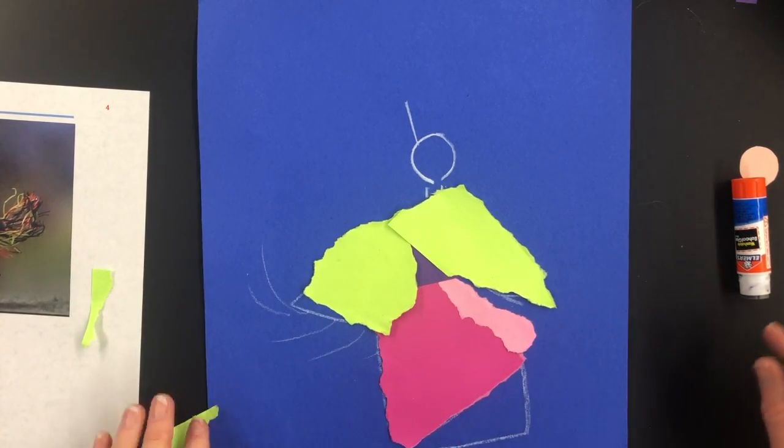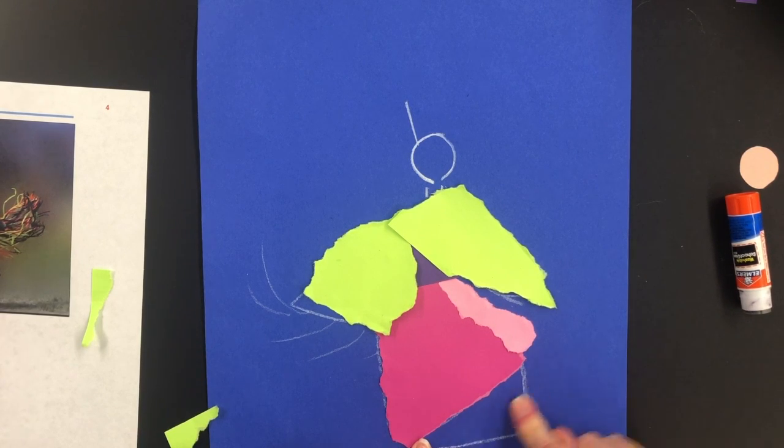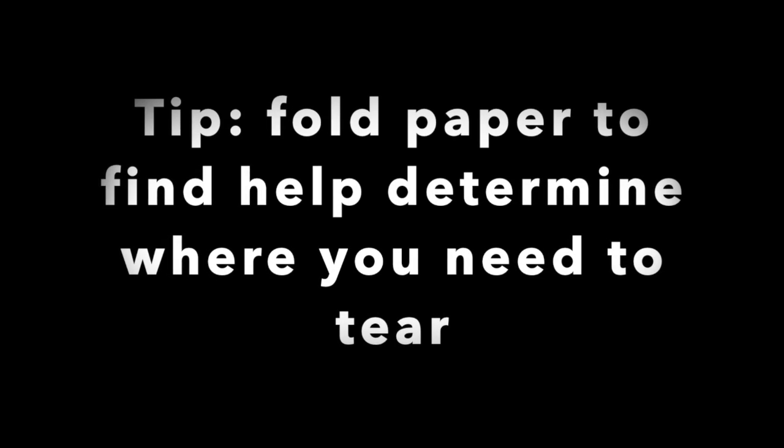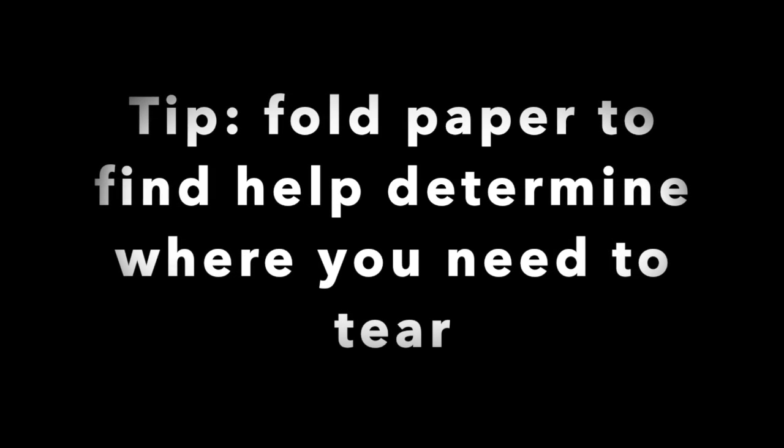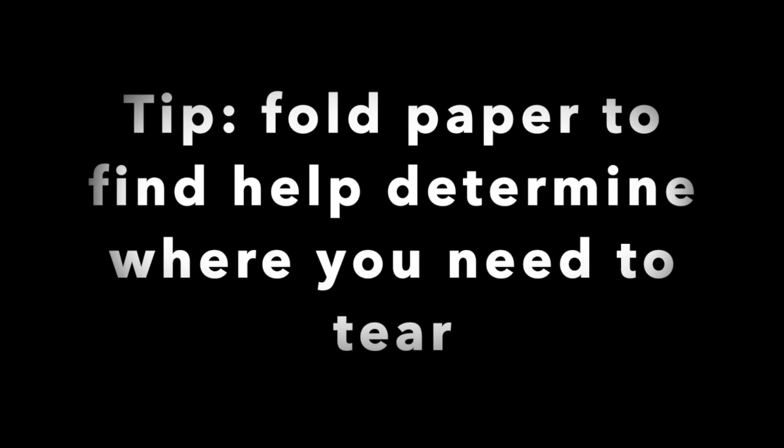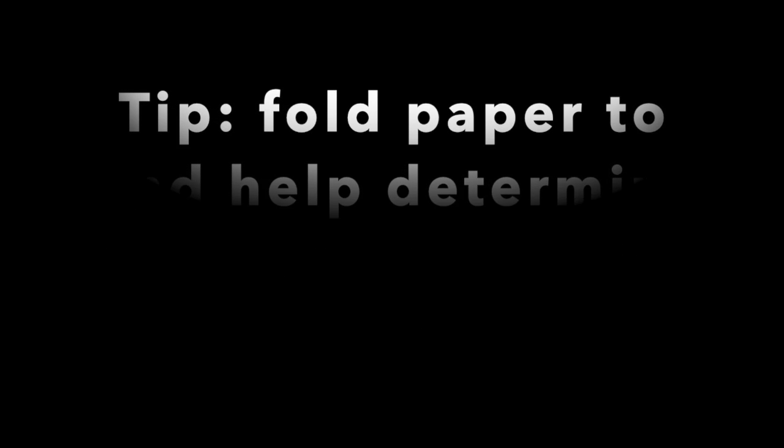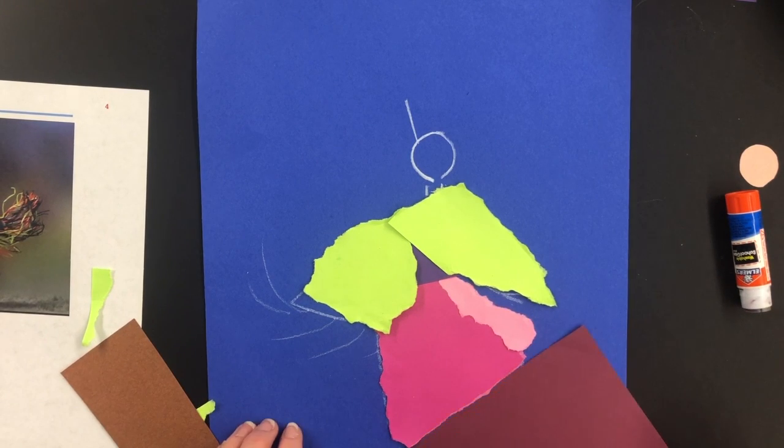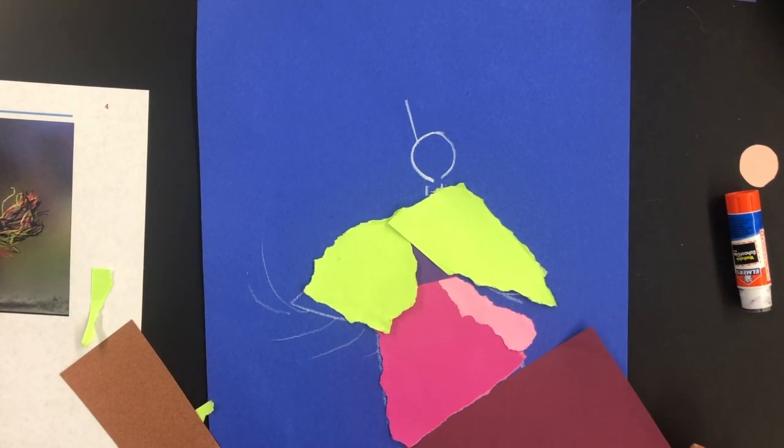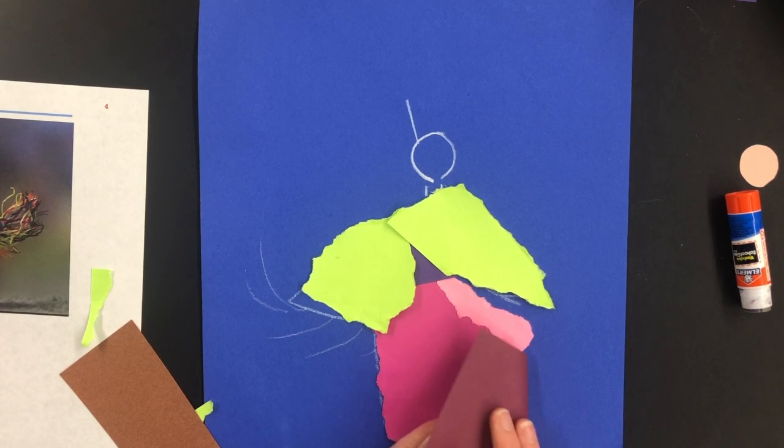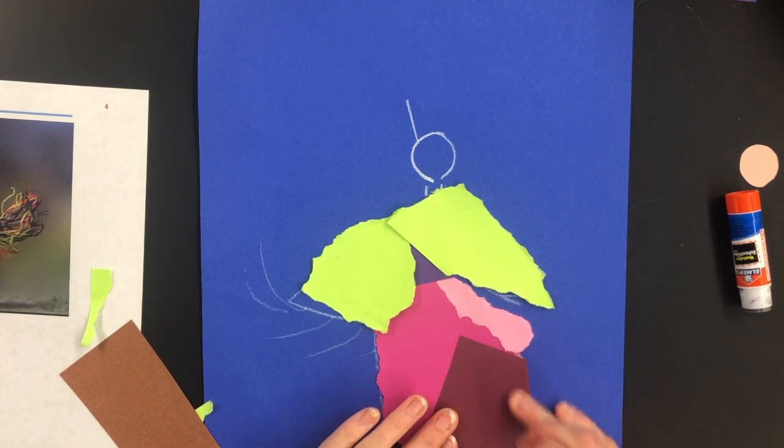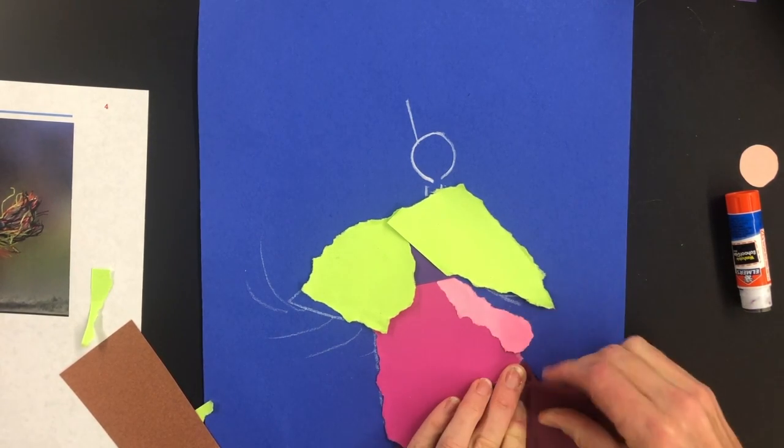So this is all starting to come together. This darker part, I might need a maroon. I could use this darker maroon here. And again, if I lay it down, I can just kind of fold where I think I need to tear it.